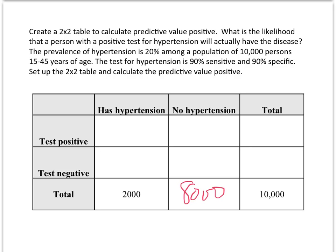Next we take the sensitivity which is 90% to figure out cell A. So 90% of 2,000 is 1,800. We do the subtraction to find out what this would be, it's 200.